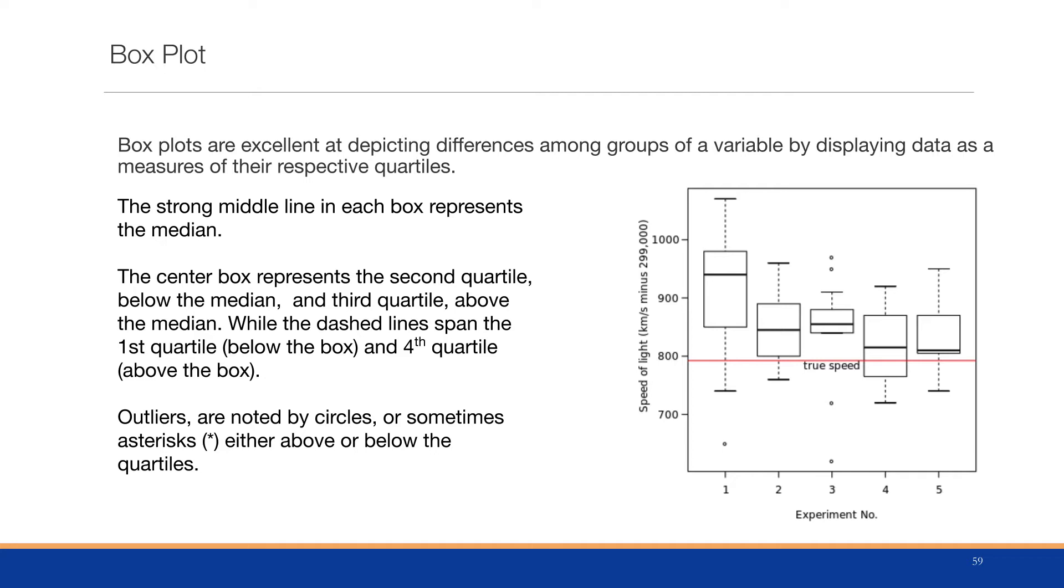This allows us to compare the individual items, say experiment number one versus experiment number two. One of the things we look for is we look for that middle line to see if the middle line falls within the interquartile of another box for another group. If they do, in general, it means that there's no statistical difference between the groups.